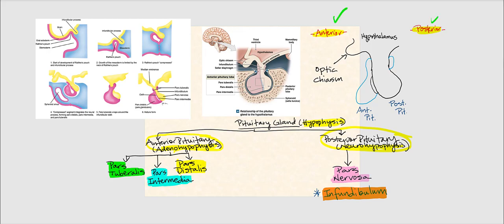To identify the anterior versus posterior pituitary without labels, use the optic chiasm — also called the optic chiasma — as a landmark. This is where the optic nerves crisscross. Since the eyeball faces anteriorly and the optic nerve is associated with the eyeball, once you identify the optic chiasm, you can determine what is anterior and what is posterior.